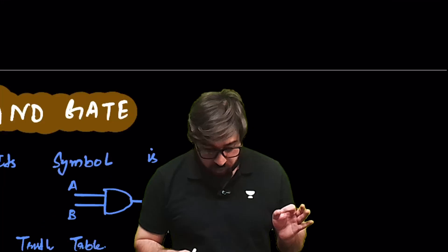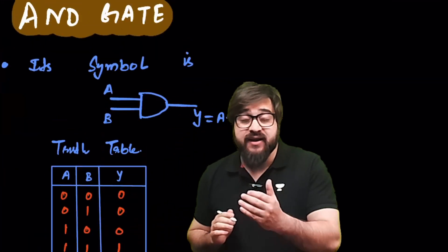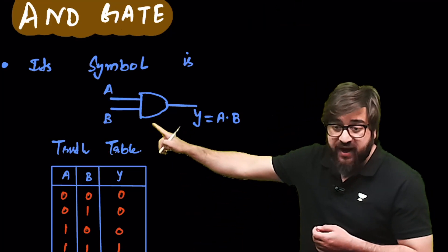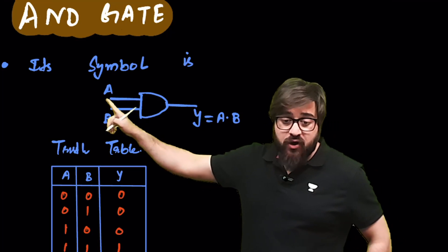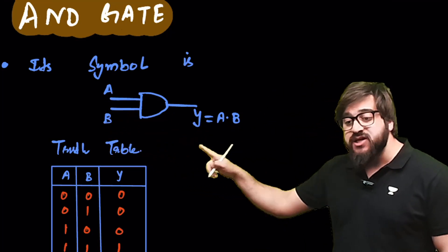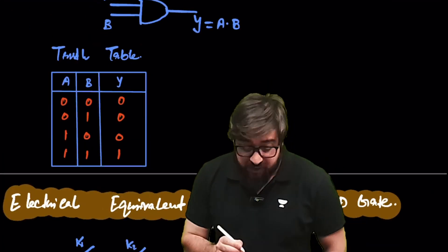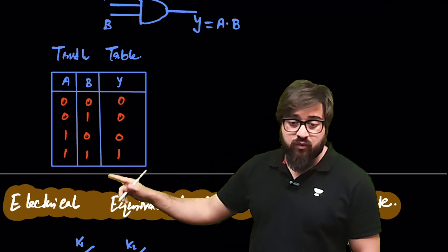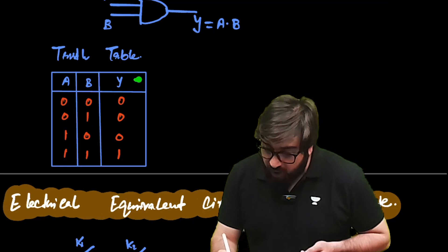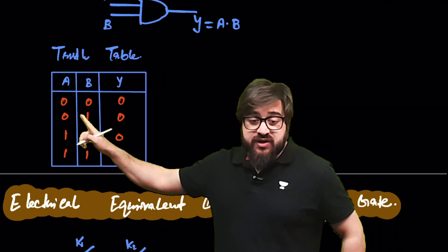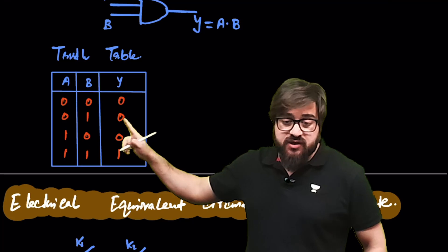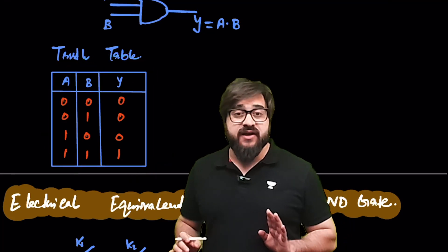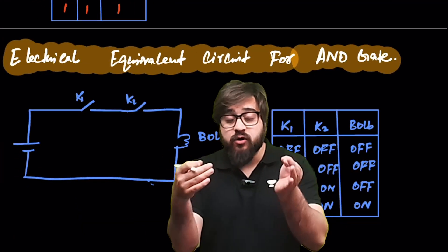The AND gate's operation is multiplication. This is the symbol of the AND gate. If inputs are A and B, the output is Y = A·B. Truth table: 0·0=0, 0·1=0, 1·0=0, 1·1=1.